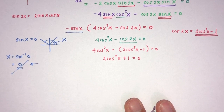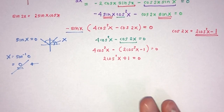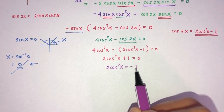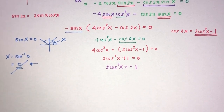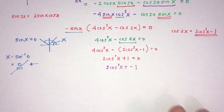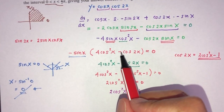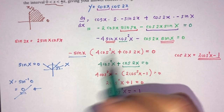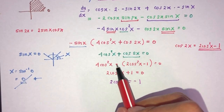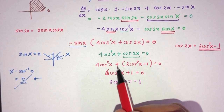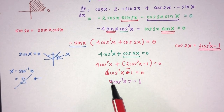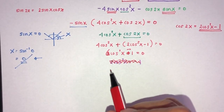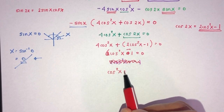Something seems off — because if I rearrange, that gives 2 cos squared x equals minus 1. I see the mistake already: if you factorize the minus sign outside the bracket, it will become plus inside. So that's the correction. It should be 4 cos squared x minus 2 cos squared x plus 1 equals 0, giving 2 cos squared x plus 1, wait — that becomes 6 cos squared x minus 1 equals 0, so cos squared x equals 1 over 6.